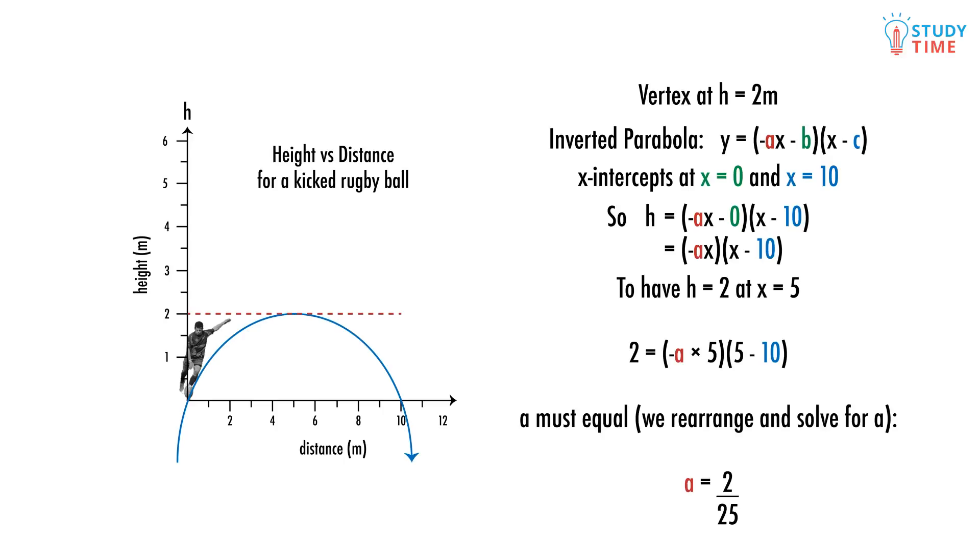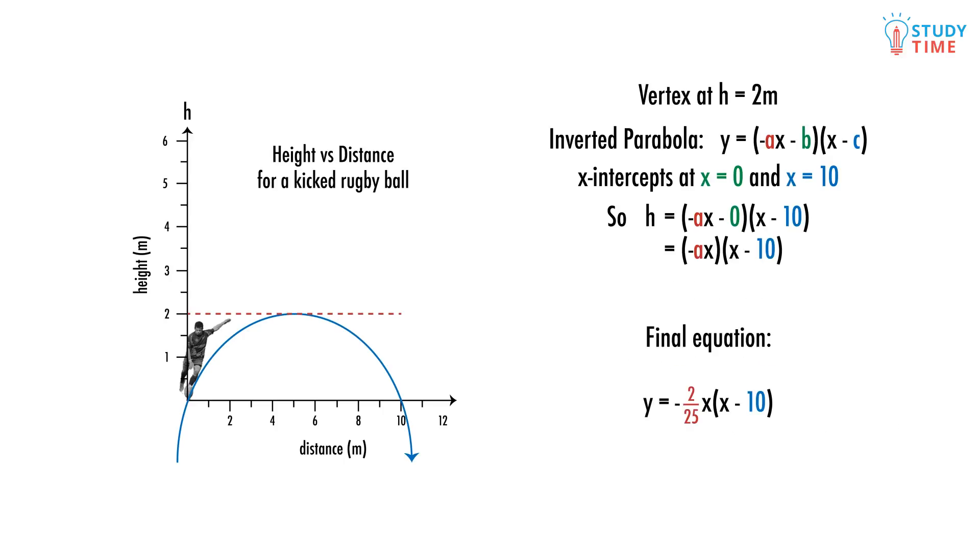With a bit of algebra, we find a to be 2 over 25. And so our final equation is now h equals negative 2 over 25, x plus 0, times x minus 10. This is just a factorised quadratic.